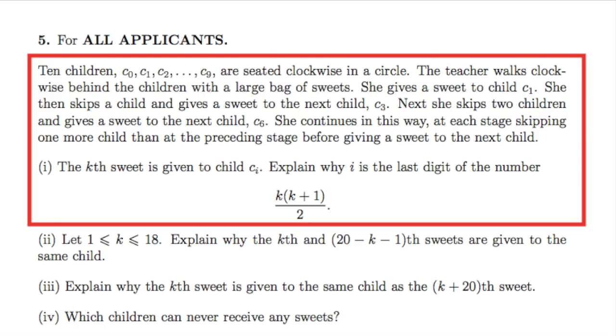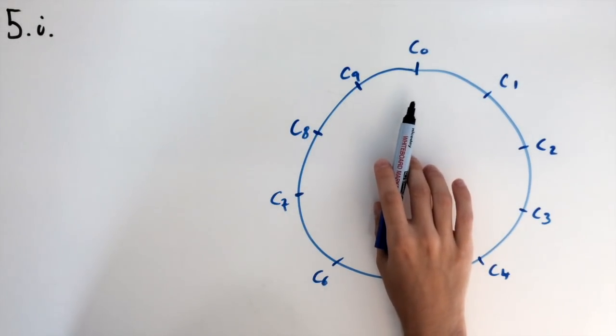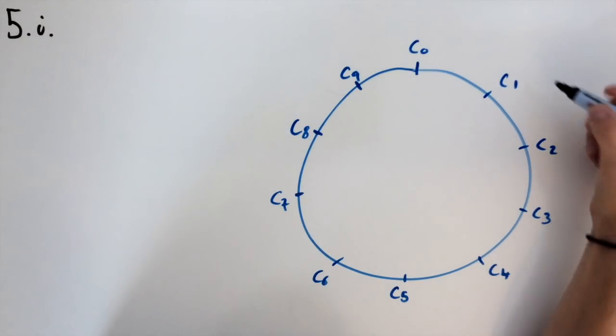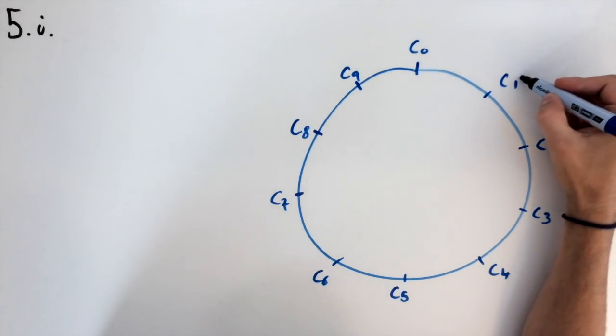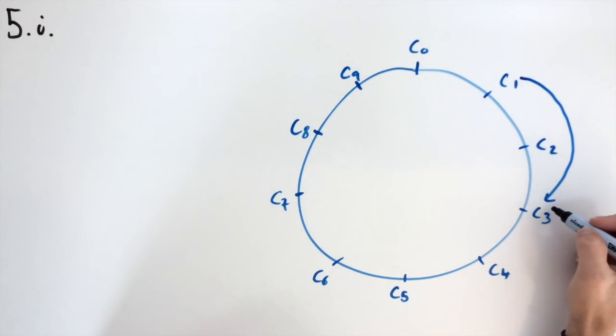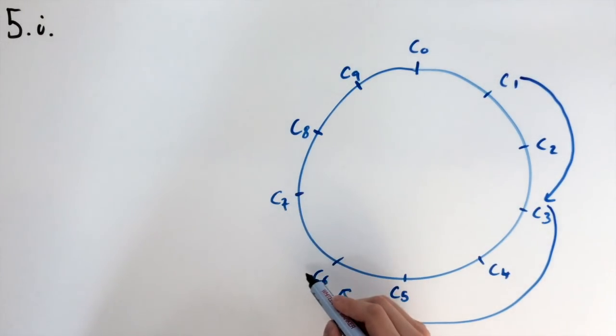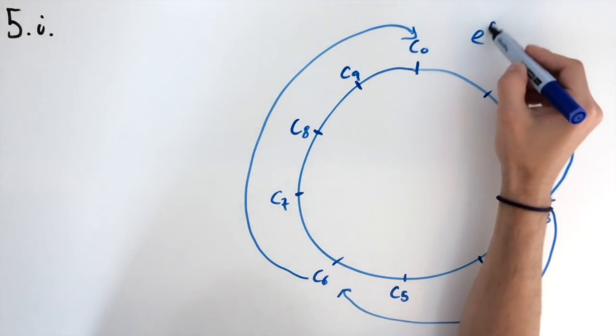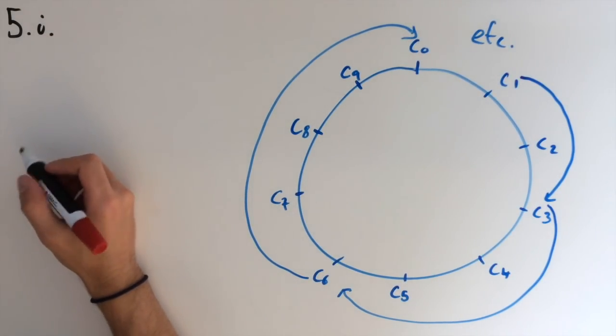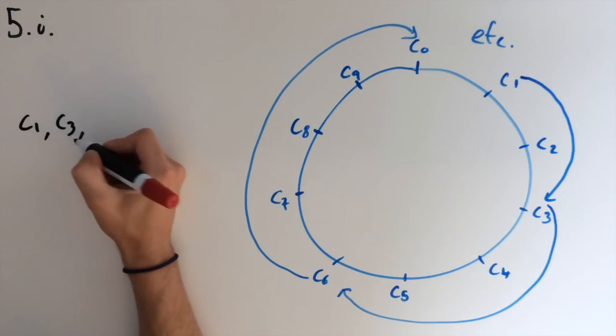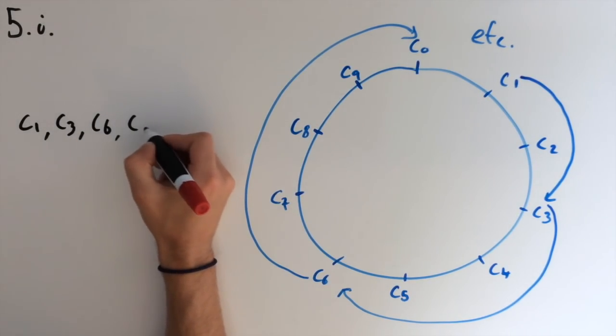For part I, the kth sweet is given to the child Cl. Explain why l is the last digit of the number k times k plus 1 over 2. This diagram represents our table. The children are arranged clockwise in increasing order from C0 up to C9. I'm just going to sketch the pattern the teacher takes. So she starts off at C1, then she skips a student and goes to C3, gives a sweet to C3. Then skips two and goes to C6, then skips three and goes back to C0. And this is going to carry on. So she starts at C1, then goes to C3, then goes to C6, then goes to C0 and etc.